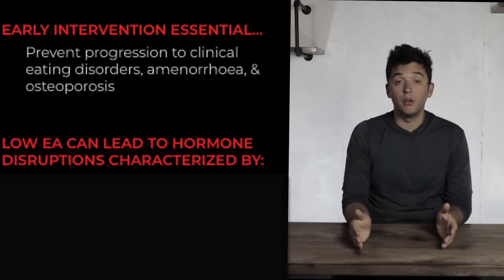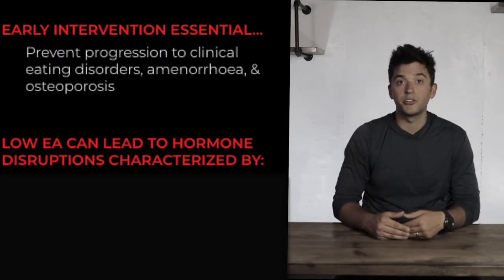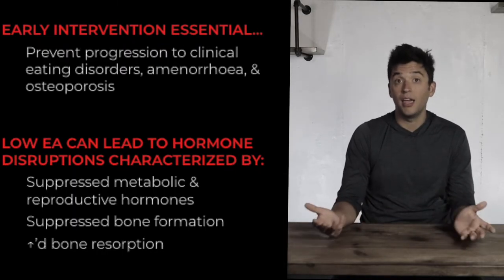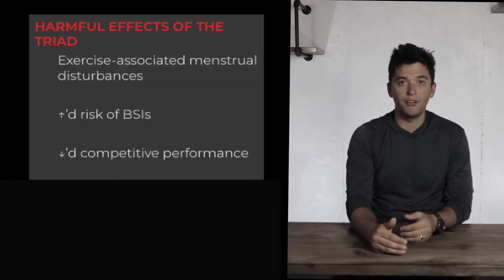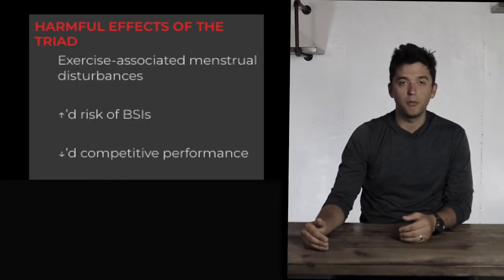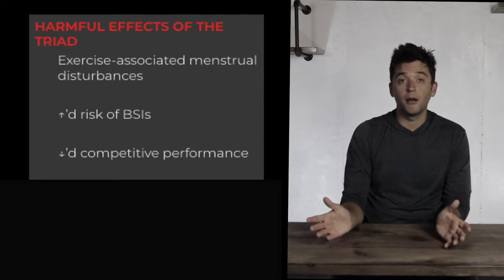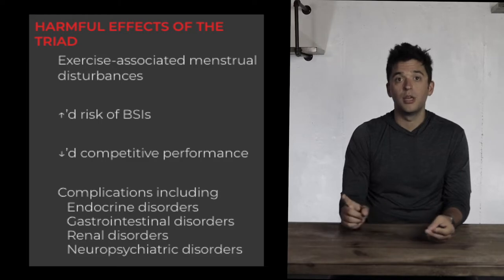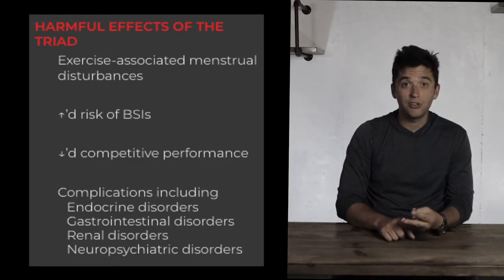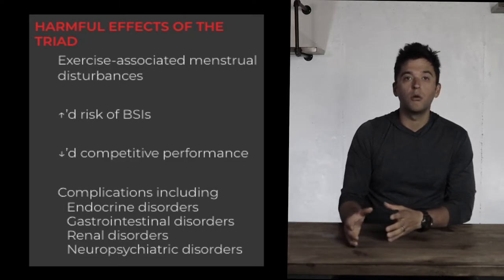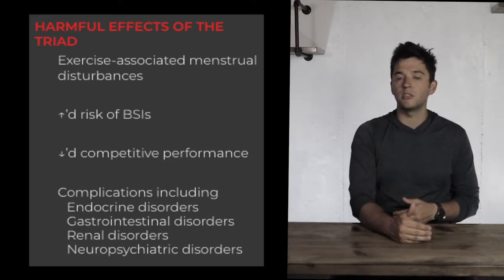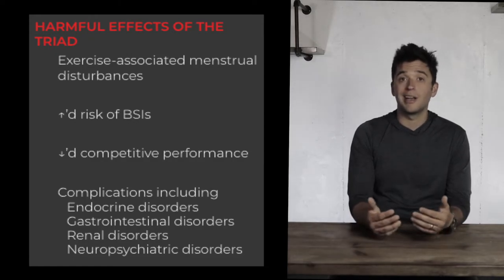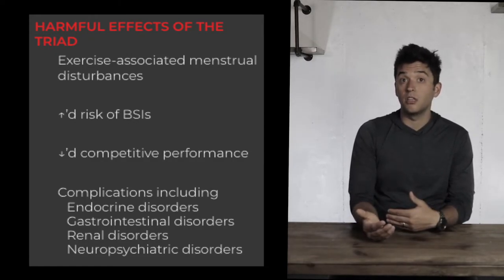Low energy availability can suppress hormone function, causing suppressed bone formation and increased bone resorption. The athlete triad not only increases stress injury risk but decreases performance and can lead to renal issues, metabolic problems, and neuropsychiatric disorders. Whether you're a physical therapist, chiropractor, or coach, you might be the first person to notice these tendencies — educating patients on these risks and screening for this pattern is really important.